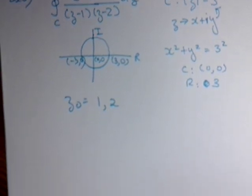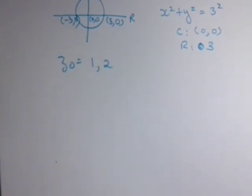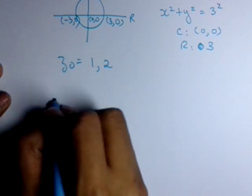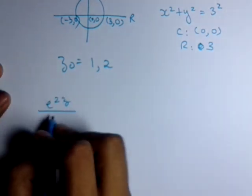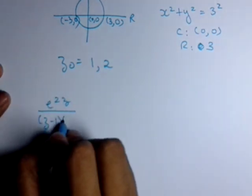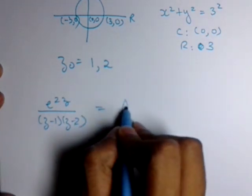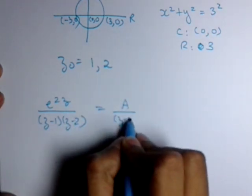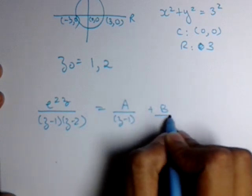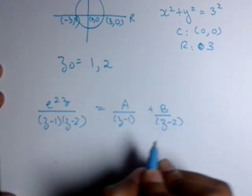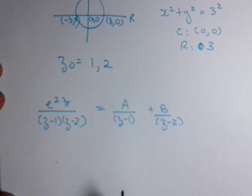So there's a trick how to do that. We can write e raised to 2z upon (z minus 1)(z minus 2) as A upon (z minus 1) plus B upon (z minus 2). We have to bifurcate this into two parts, involving each part where each part has one z0.